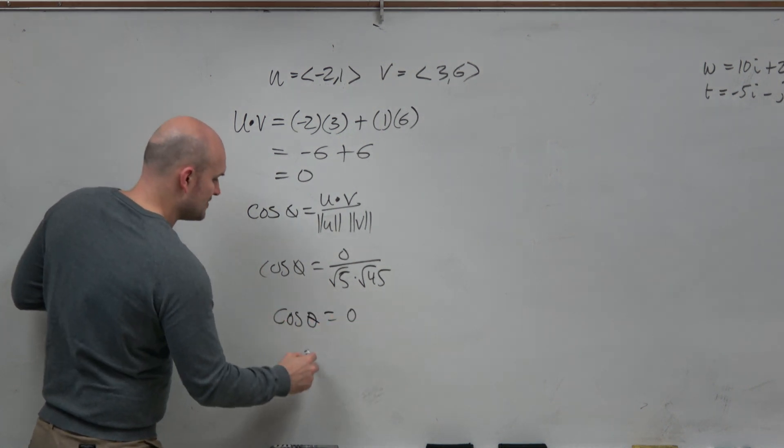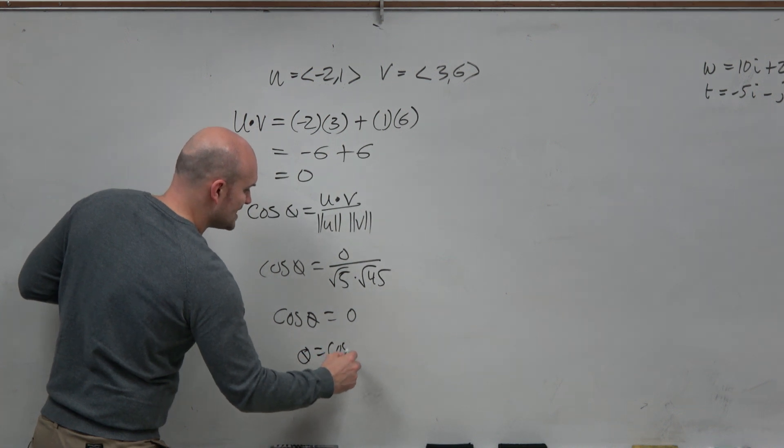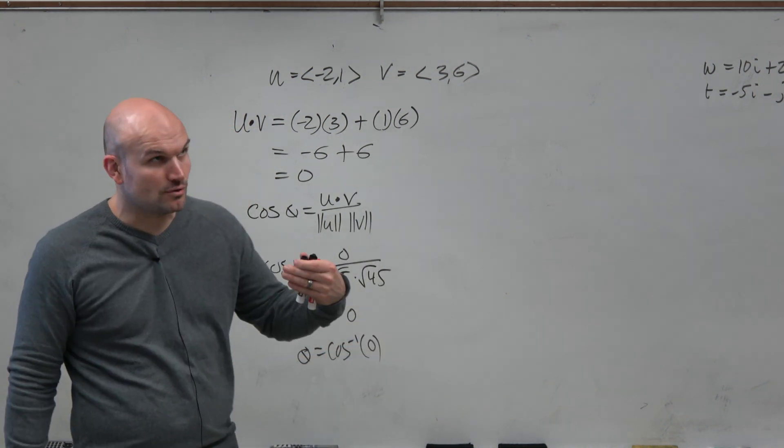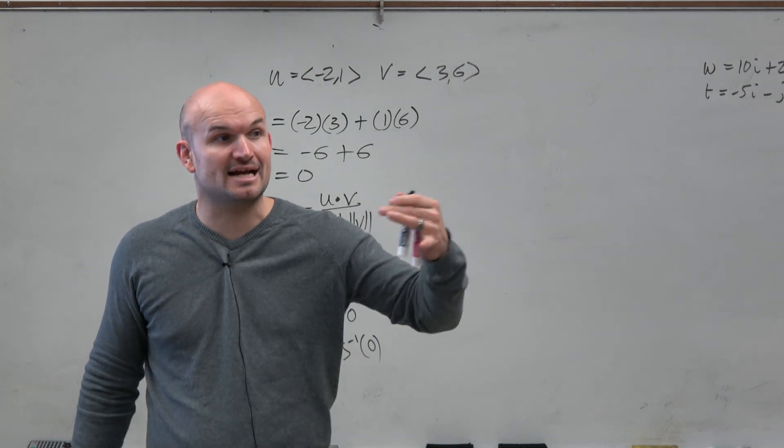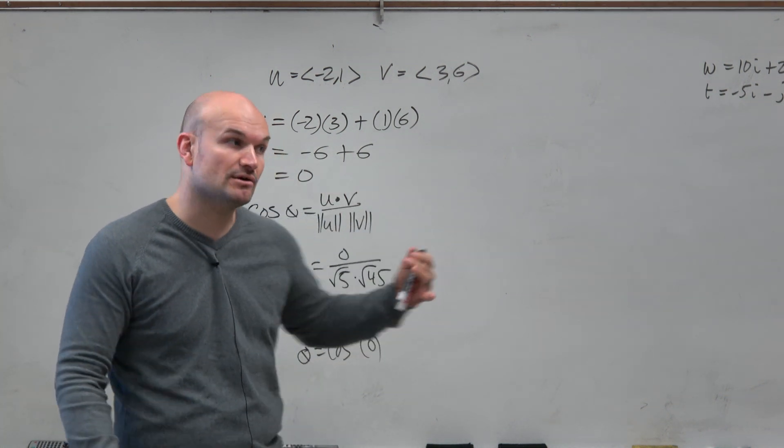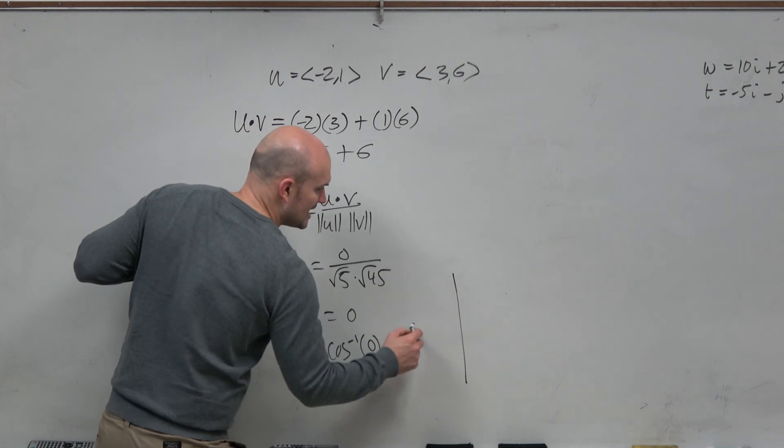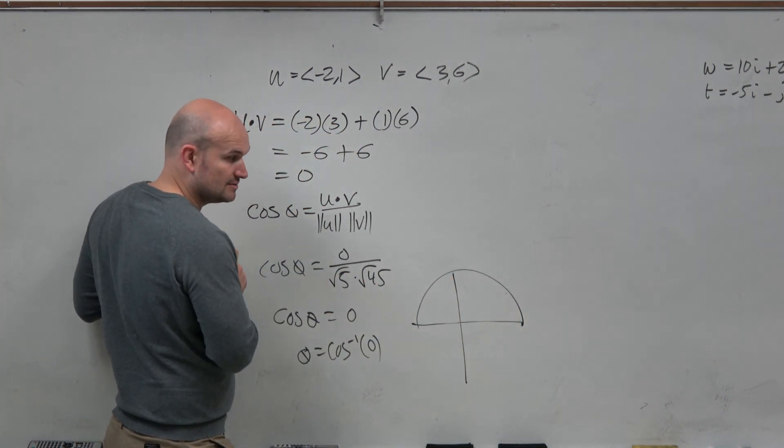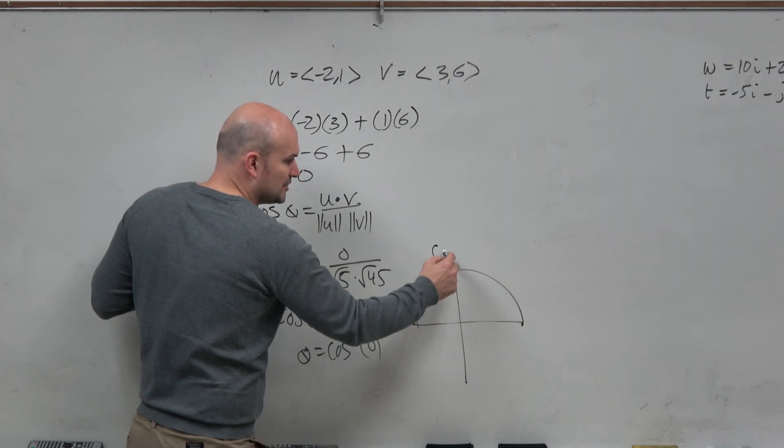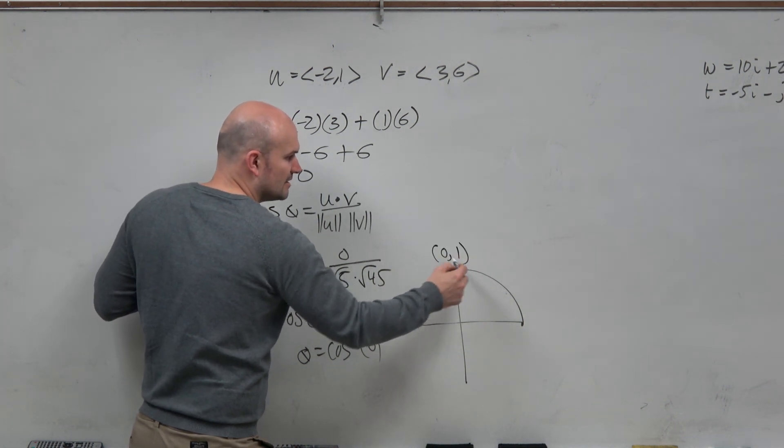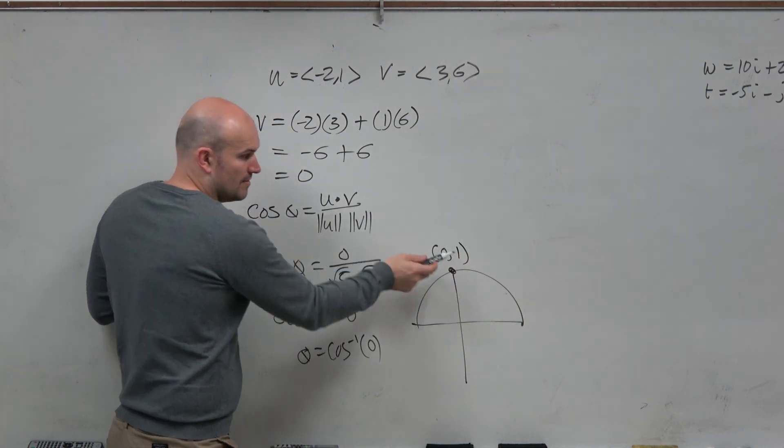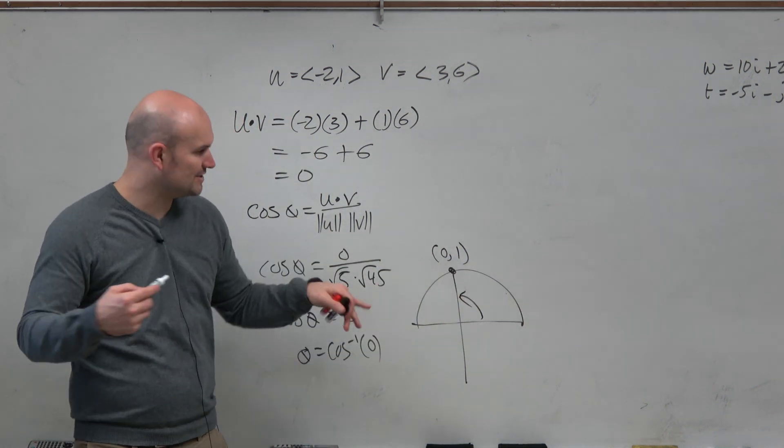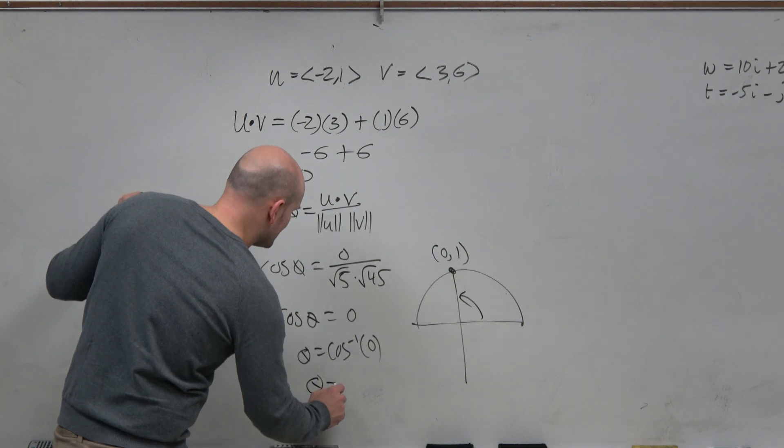Then we say, alright, theta equals cosine inverse of 0. So what is the angle that produces an x value of 0? So again, we say, alright, well, cosine inverse is restricted to the first and second quadrant. And we're looking for the angle that produces x as 0, which is pi halves. And in terms of degrees, it's 90 degrees. So you can see that theta is equal to 90 degrees.